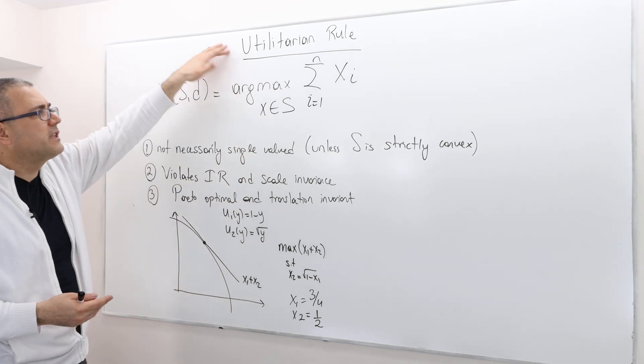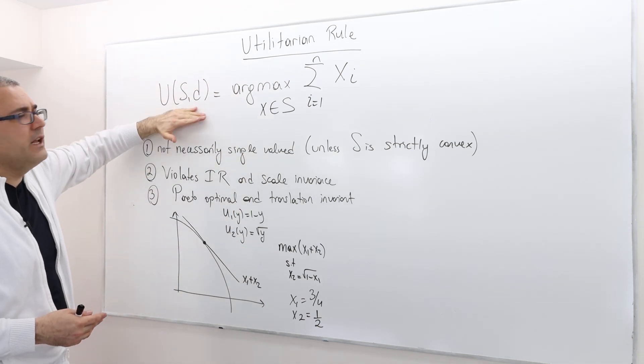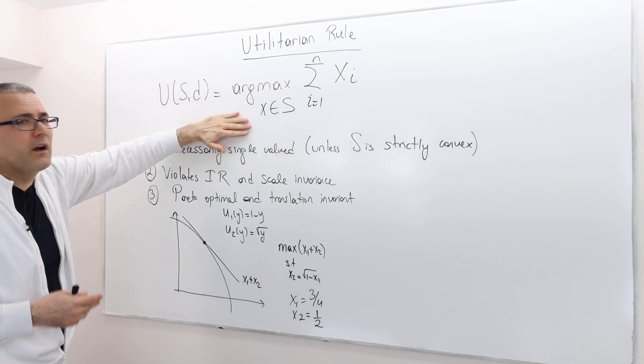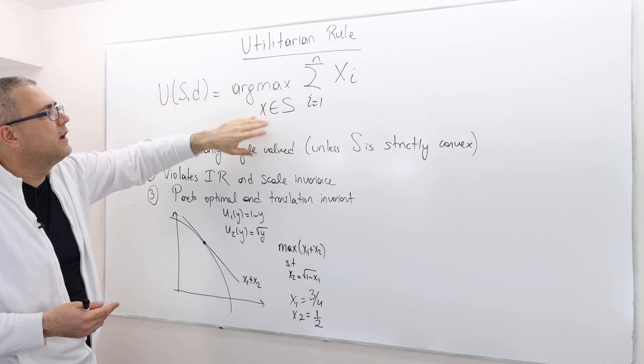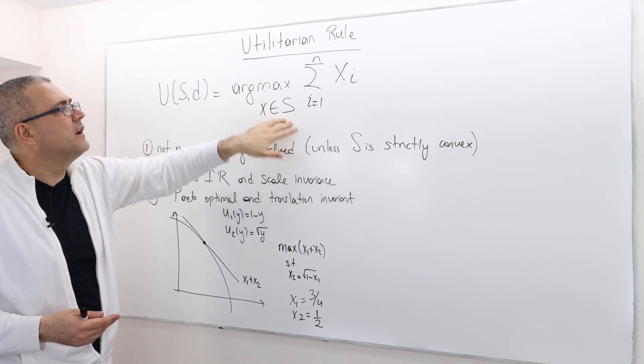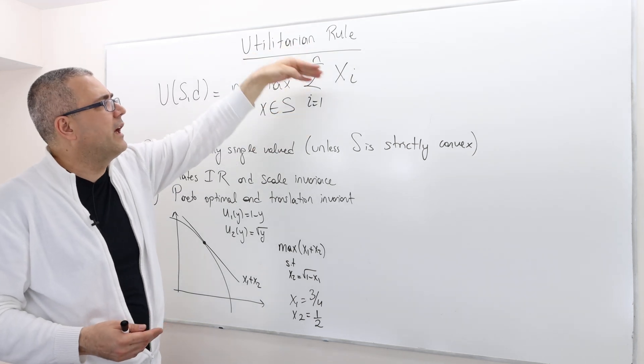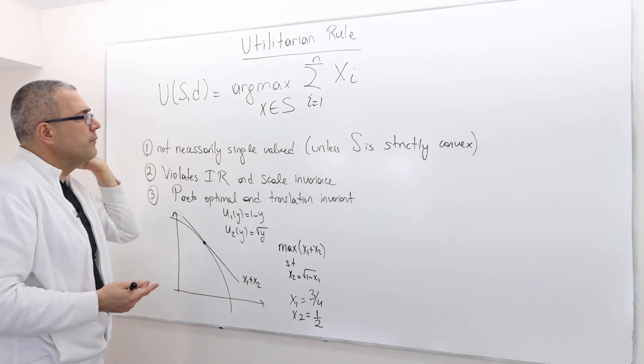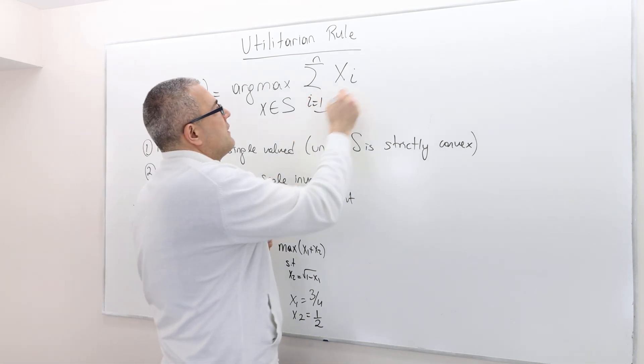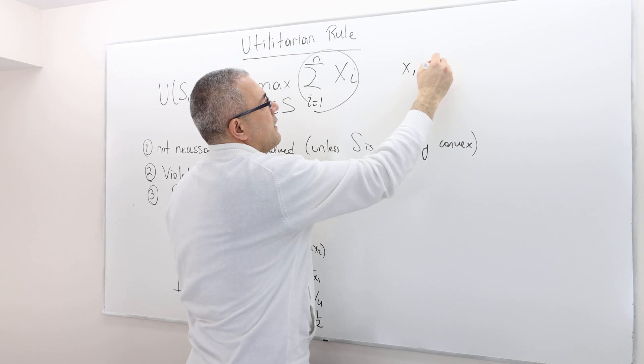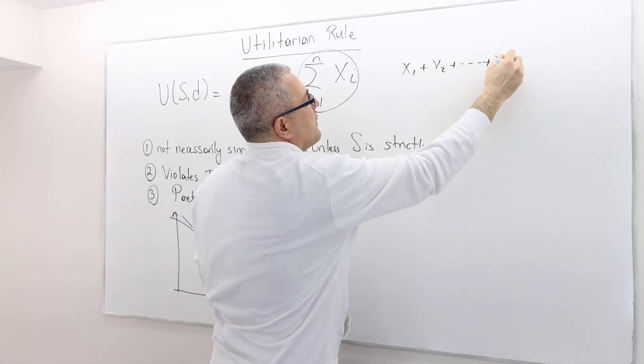So the utilitarian rule, for any bargaining problem, is defined simply by argmax X∈S. We basically maximize this summation from i=1 to n of xi. So this summation is x1 plus x2 plus all the way to xn.